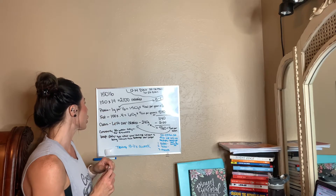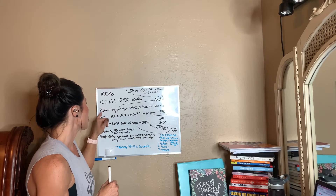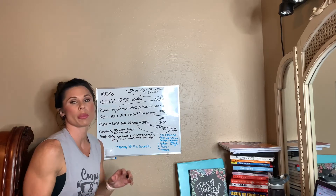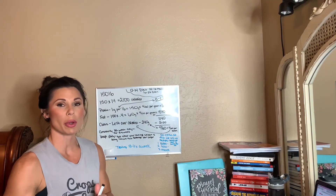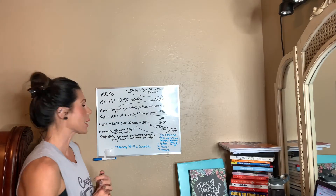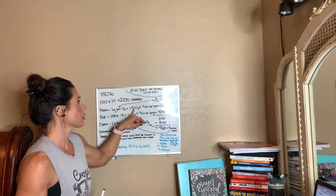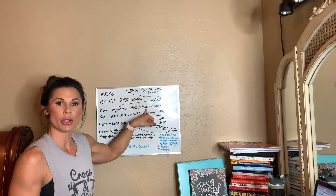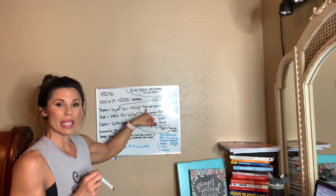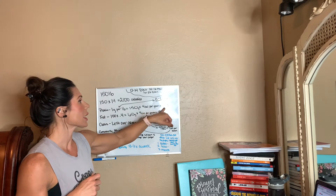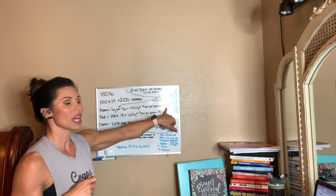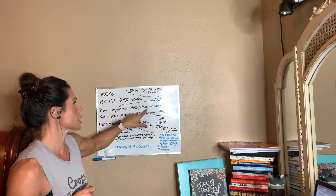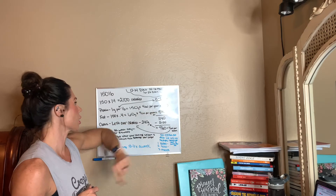To figure her macronutrients from her calories, we start with protein. We're going to use one gram per pound of body weight, which gives us 150 grams. There are four calories per gram of protein, so 150 grams times four gives us 600 calories.